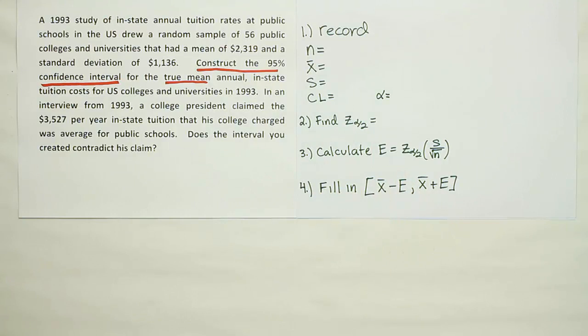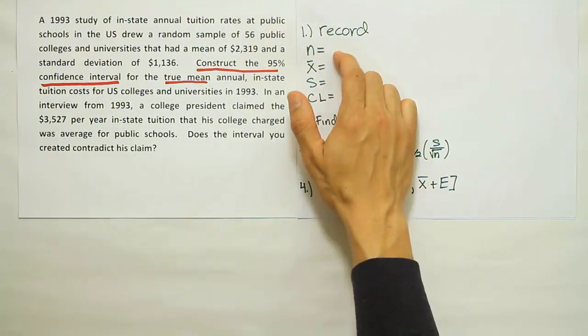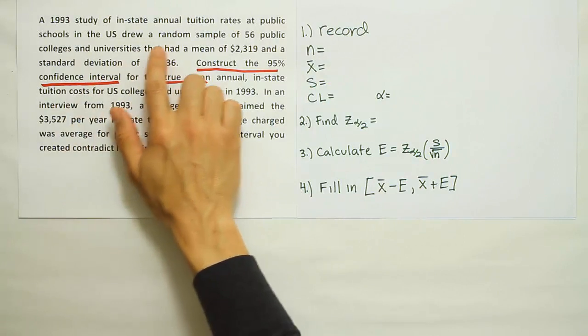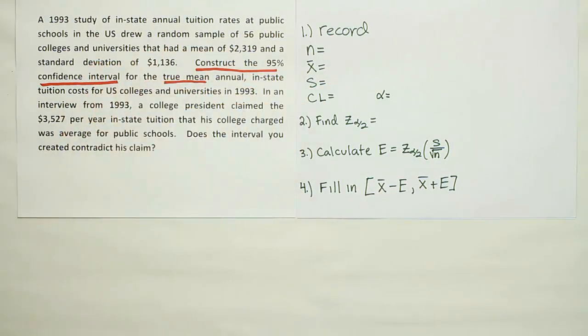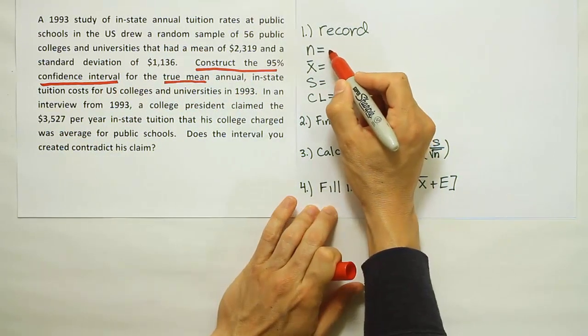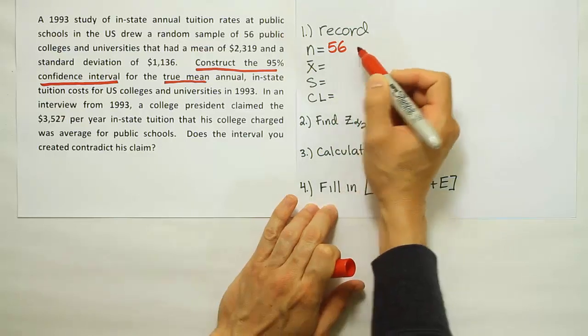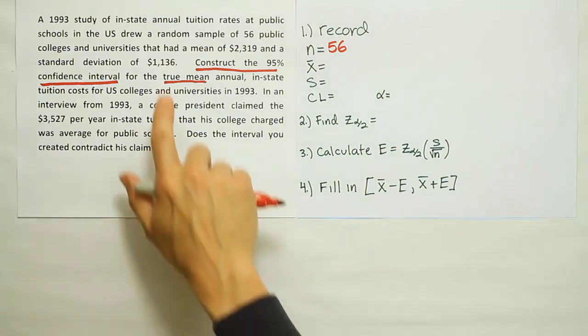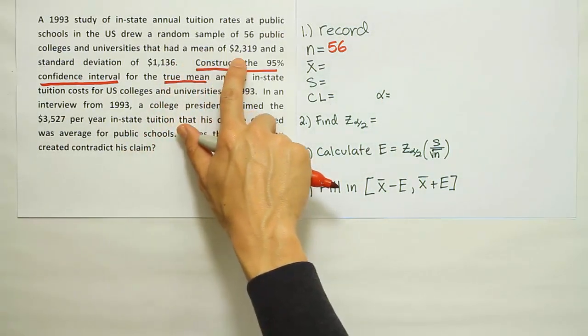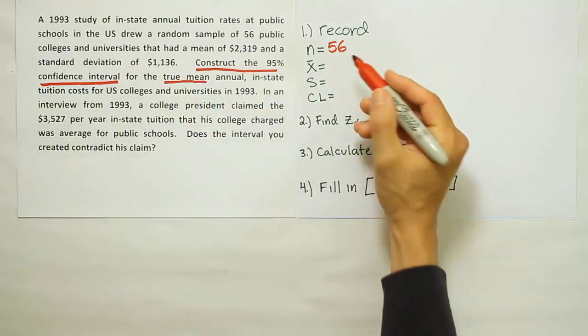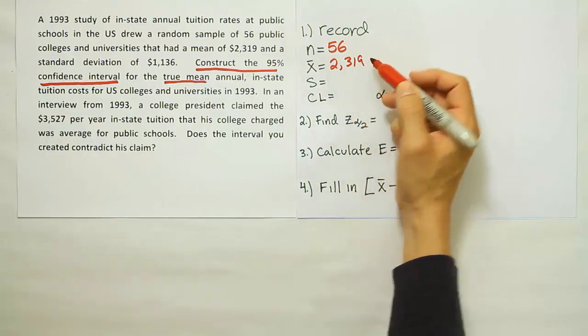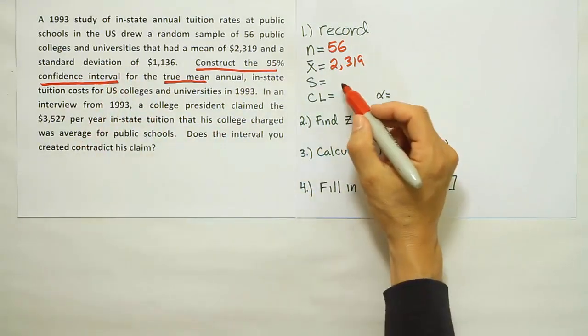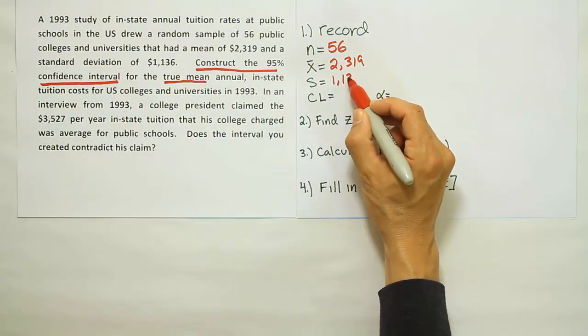Let's start filling in the first step, which is the record the data step. When I read the problem, it says there was a random sample of 56 public colleges and universities. That 56 is my sample size, so N is 56. Then it says that had a mean of 2,319. So that's my x-bar, the average tuition from the study. And a standard deviation of $1,136.